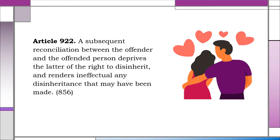Article 922: a subsequent reconciliation between the offender and the offended person deprives the latter of the right to disinherit, and renders ineffectual any disinheritance that may have been made. This article applies to the disinheritance of a child or descendant, parent or ascendant, or a spouse. If there is no will, reconciliation deprives the offended person of the right to disinherit. But if the person has already been disinherited, reconciliation sets aside the disinheritance already made.